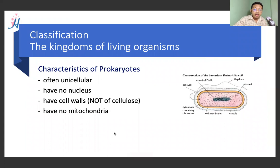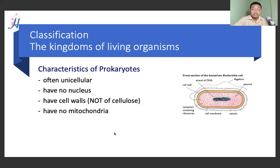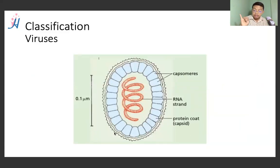Prokaryotes are often unicellular. They have no nucleus, but they do have cell walls, though these are not made up of cellulose. They do not contain a nucleus or mitochondria.